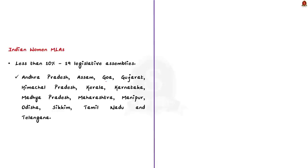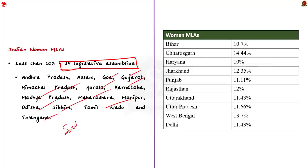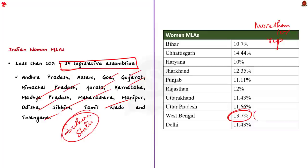At the state level, around 19 legislative assemblies have less than 10% women MLAs, including Andhra Pradesh, Assam, Goa, Gujarat, Himachal Pradesh, Kerala, Karnataka, Madhya Pradesh, Maharashtra, Manipur, Odisha, Sikkim, Tamil Nadu and Telangana — essentially all southern states. West Bengal has the highest women's representation among state legislatures, but even that proportion remains low. Overall, women's representation in Indian politics is insufficient.